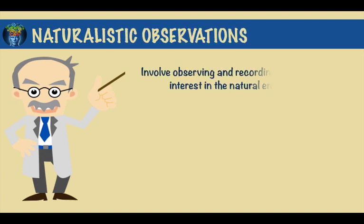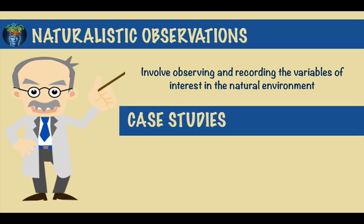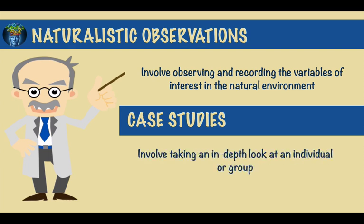Naturalistic observations involve observing and recording the variables of interest in the natural environment without interference or manipulation by the experimenter. Such studies can be useful to view the variables of interest in a natural setting, but they can be time consuming and expensive, and they don't allow for control of any of the variables.